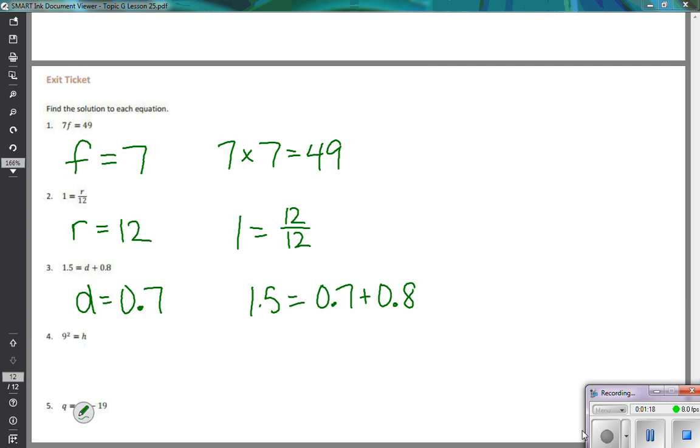And the next one, we have 9 squared equals h. Well, 9 squared means 9 times 9, which would mean that h has to be 81. So we can prove it again. 9 squared equals 9 times 9, which equals 81.